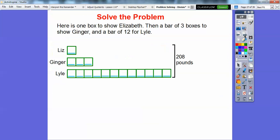We're going to draw another bar model for the diagram of all three siblings and then divide. So here's one box that shows Elizabeth and then since Ginger is three times that, we put three boxes here and here's Lyle for 12 boxes right here. Together, all of these boxes weigh 208 pounds. We can divide the total weight by the total number of boxes.